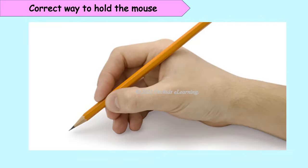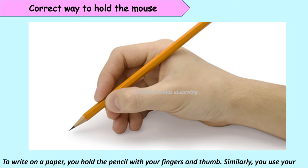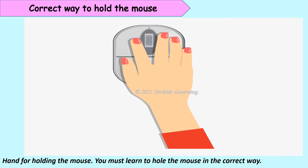Correct way to hold the mouse: To write on paper, you hold the pencil with your fingers and thumb. Similarly, you use your hand for holding the mouse. You must learn to hold the mouse in the correct way.